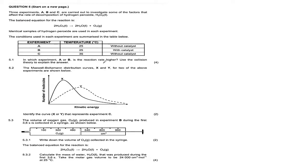Question 5.1 asks: in which experiment, A or B, is the reaction rate higher? Use the collision theory. Between A and B, temperature remains constant as a control variable, but the factor being investigated is the presence or absence of a catalyst. With a catalyst, the rate of reaction increases because the catalyst lowers the activation energy, so experiment B will have a higher reaction rate.